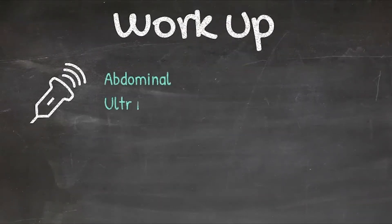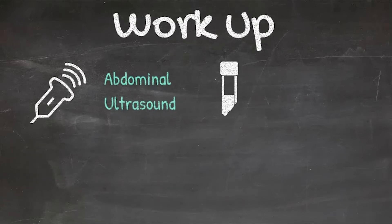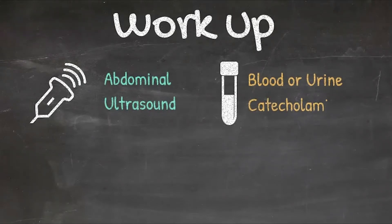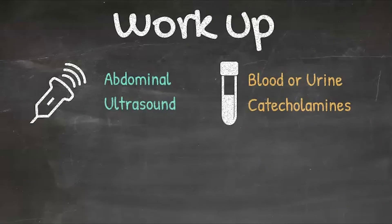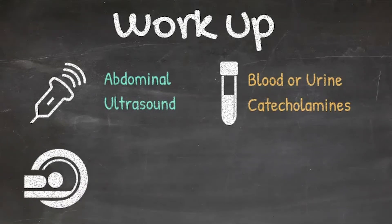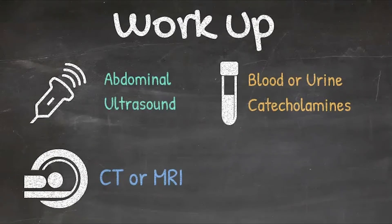When a child presents to the emergency room, they may get an ultrasound, which will demonstrate a solid mass in the abdomen. Those kids then will get a laboratory workup, and as part of the differential diagnosis, when you consider neuroblastoma, it's important to get catecholamines — either urine or serum catecholamines — as one of the most diagnostic laboratory tests that we use. Most kids would then get a cross-sectional imaging study, either a CT scan or an MRI.